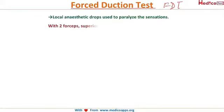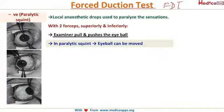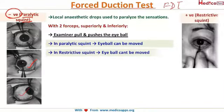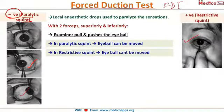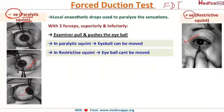The surgeon uses two forceps and tries to move the eyeball from side to side. In a paralytic squint, the eye moves freely in both directions — there is no restriction to movement, indicating a negative forced duction test and confirming paralytic squint. However, in a restrictive squint, the eye cannot be moved at all because the muscle is restricted due to trauma, fibrosis, or another cause — this is a positive forced duction test.